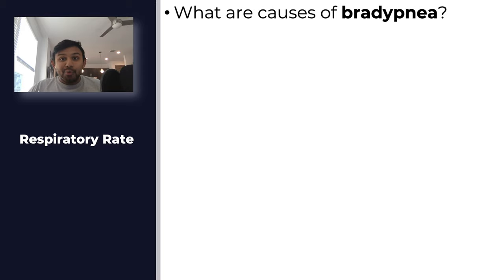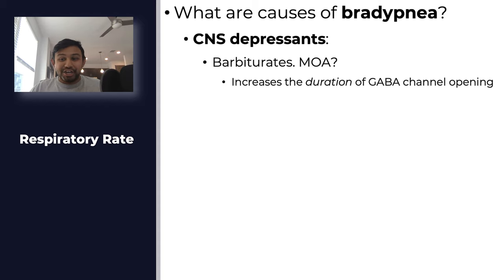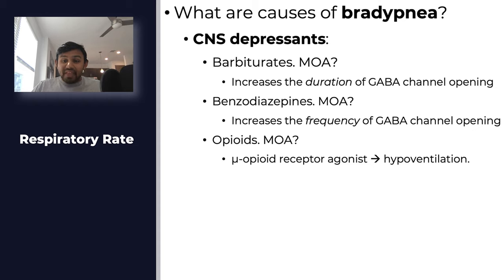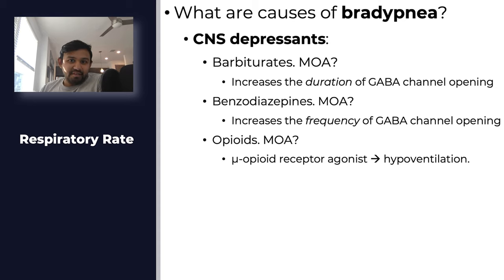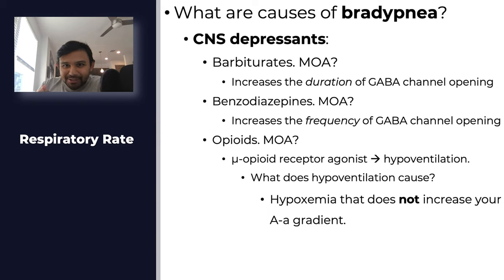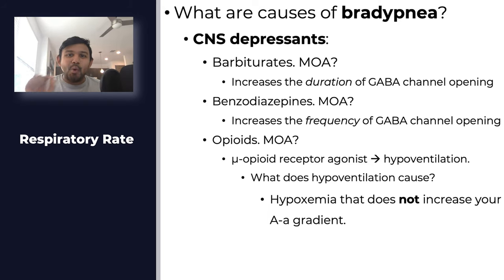Bradypnea is essentially a low respiratory rate. CNS depressants are always tested: barbiturates increase the duration of GABA channel opening; benzodiazepines increase the frequency of GABA channel opening; opioids are mu receptor agonists that cause hypoventilation. What acid-base abnormality would a patient with opioid overdose have? Respiratory acidosis — correct. And importantly, the hypoxemia from hypoventilation is the type that does not increase your A-a gradient.